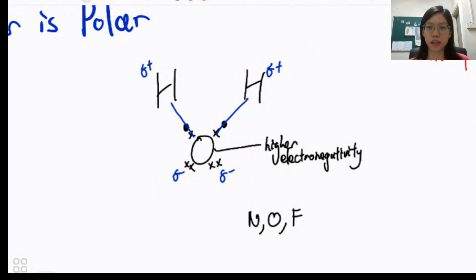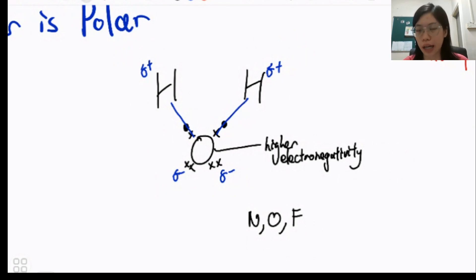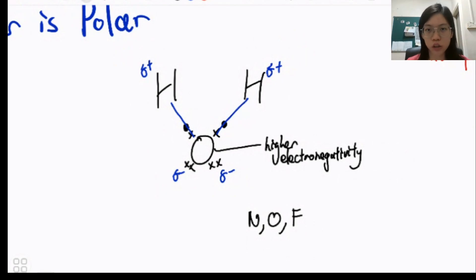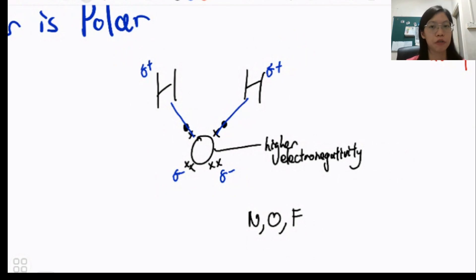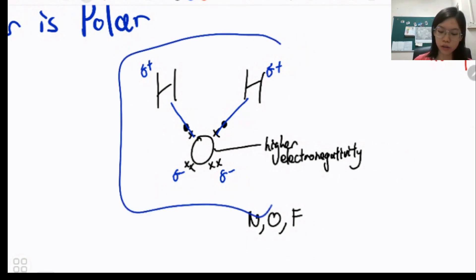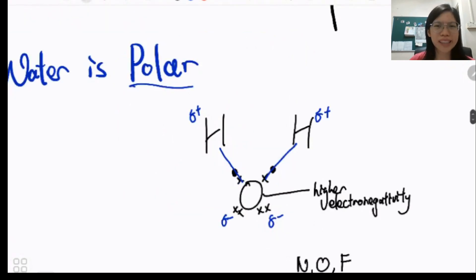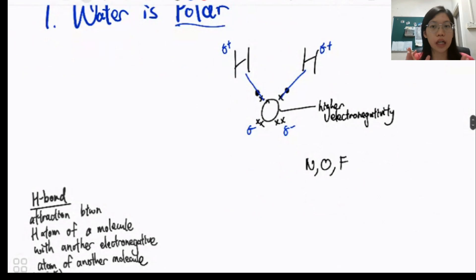The main reason water is polar is because there is a sharing of electrons between two different atoms with different electronegativity. Oxygen has higher electronegativity, so the shared electrons are pulled closer to the oxygen, giving it a partial negative charge and leaving hydrogen with a partial positive charge. This polarity gives rise to the property whereby water can act as a universal solvent.